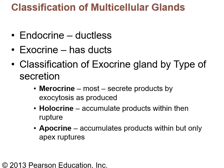Glands are another offshoot of epithelium because glands are made of epithelial tissue. There are two types: endocrine glands have no ducts and will be covered in a full chapter in A&P2. We're focusing here on exocrine glands, which have ducts, and the cell types making up those glands are epithelial tissue.